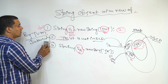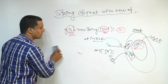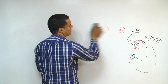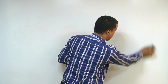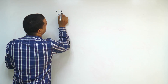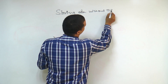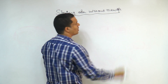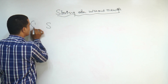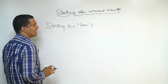Now we are going to see how string objects are created without the new keyword. For example, whenever we create a string object without the new keyword, there are some very important points. Here I am creating one string object: String S1 = "SOM", created without the new operator.